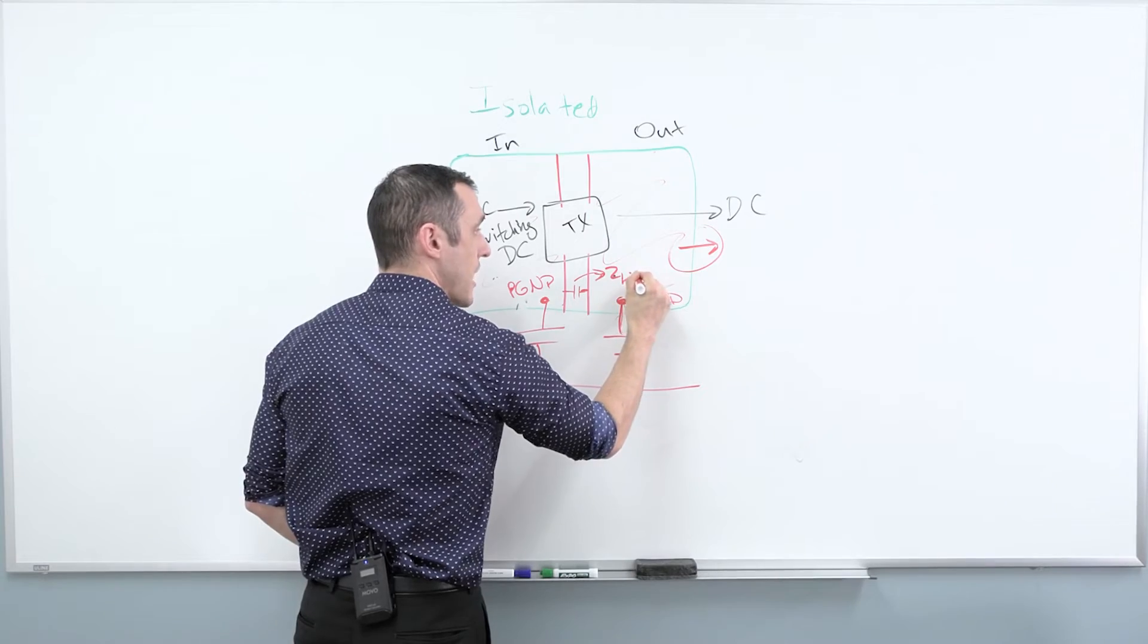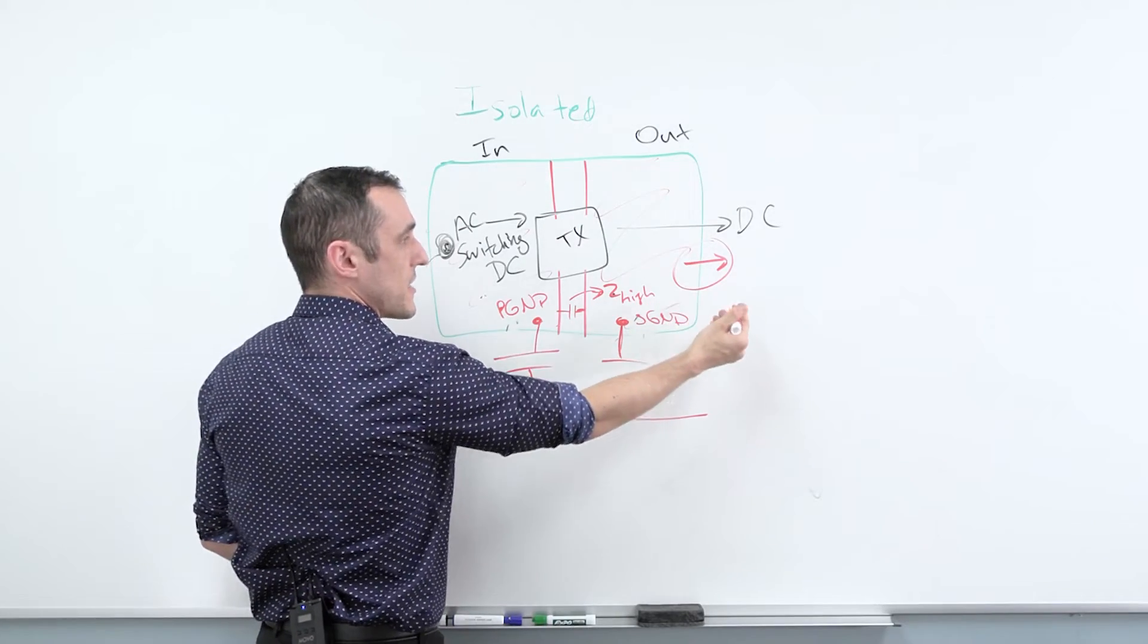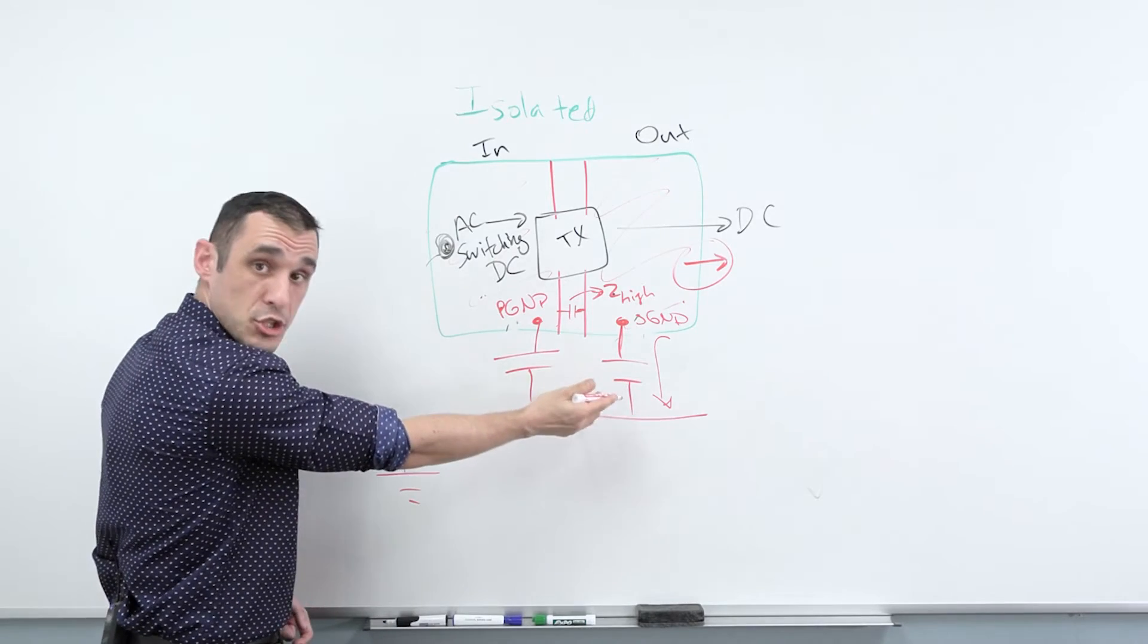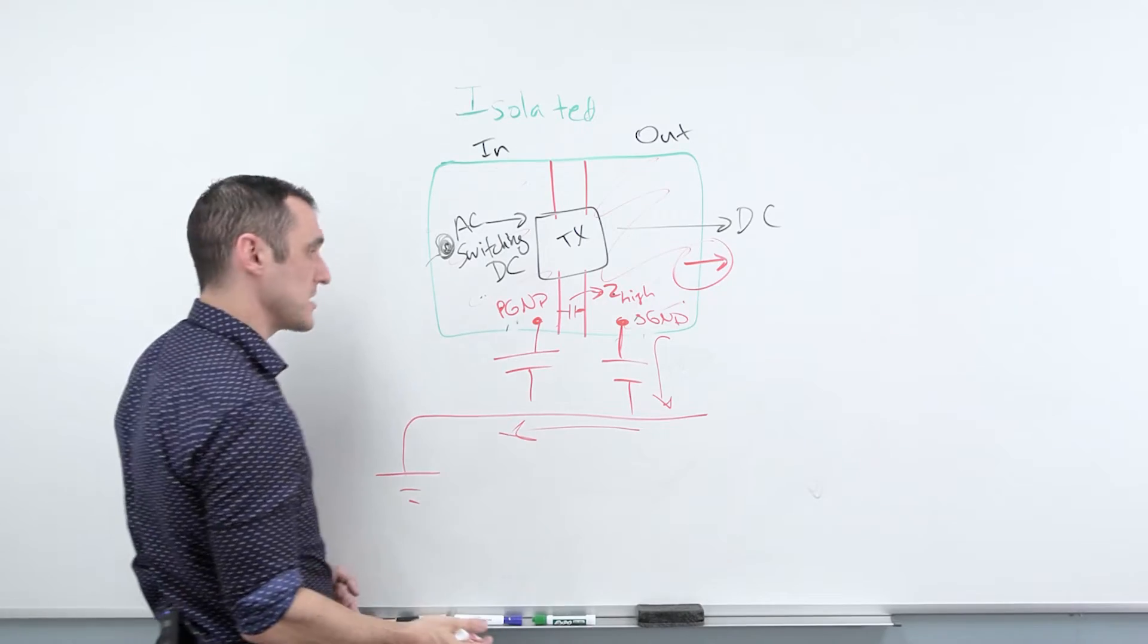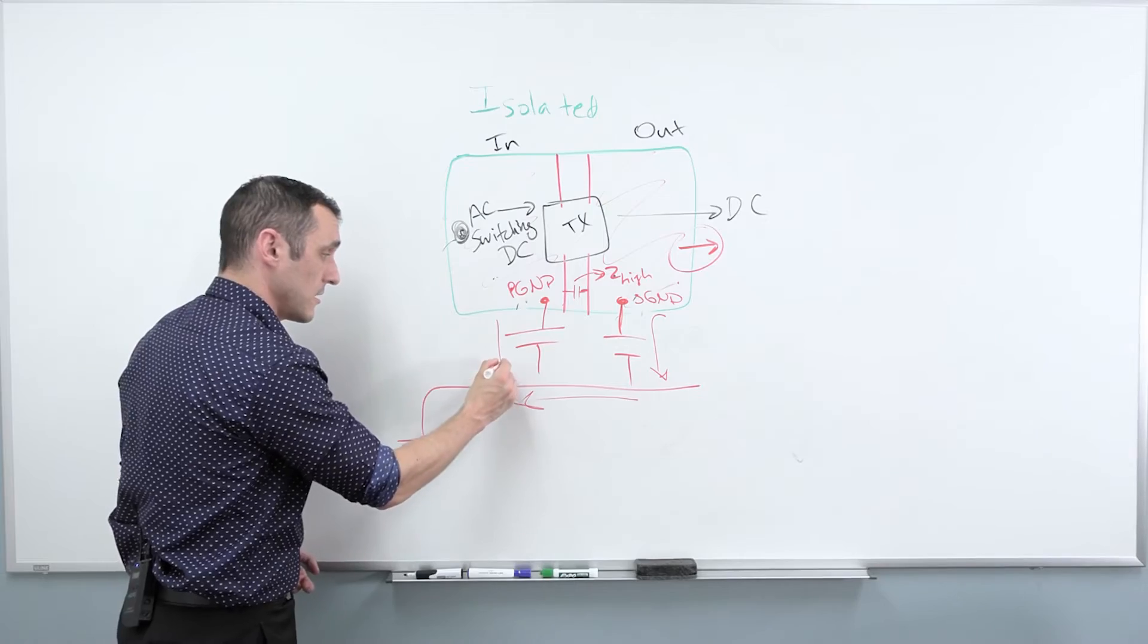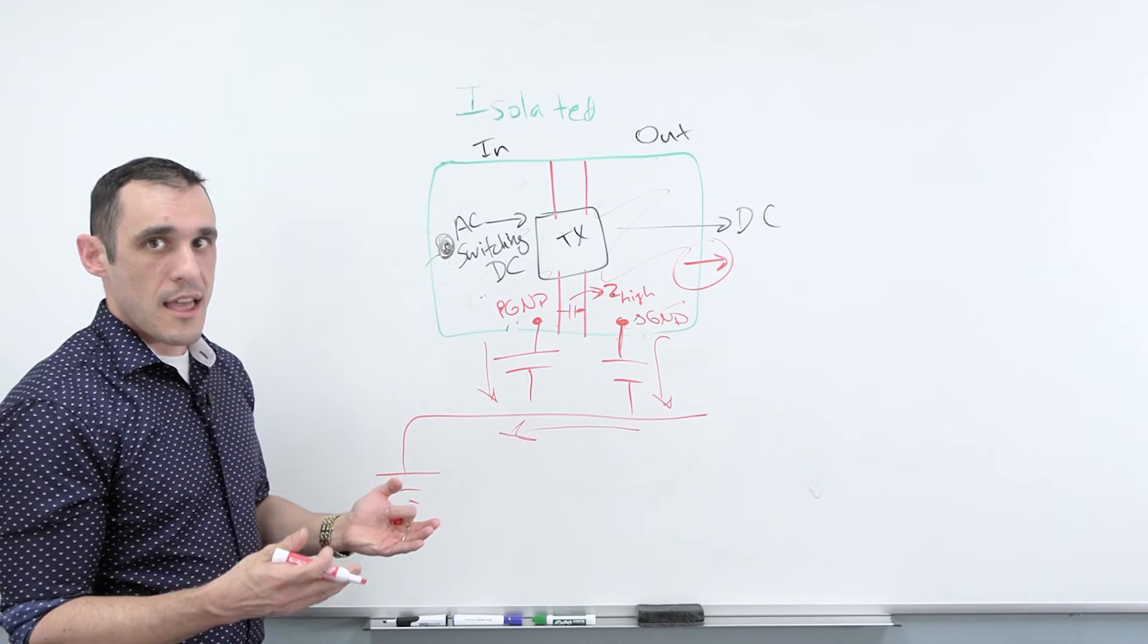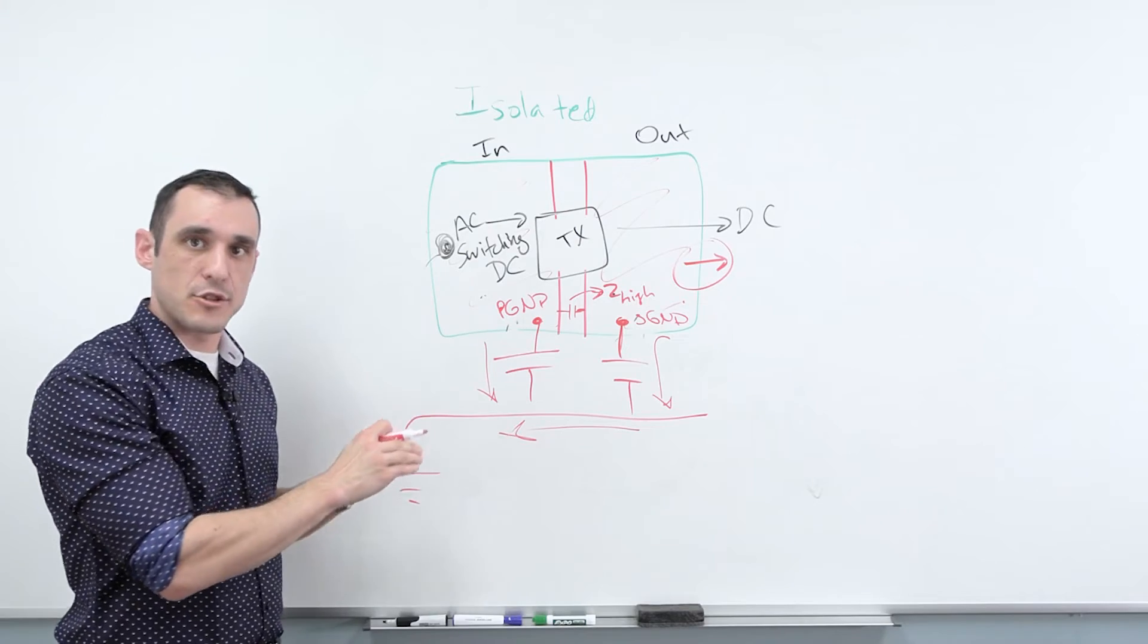What that means is that if there is an ESD event that dumps current into the secondary ground region, what's going to happen is it's going to flow through this intentionally placed capacitor and go back into the frame. That's exactly what we want. And if it should happen to also occur on the primary side, it will then also go back through and go to the frame. So this is two different ways to connect all this stuff together, and it's actually pretty standard in a class one and class two power supplies.